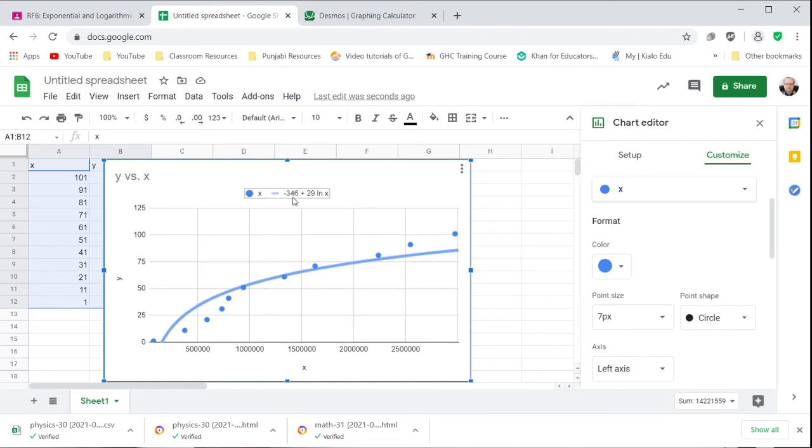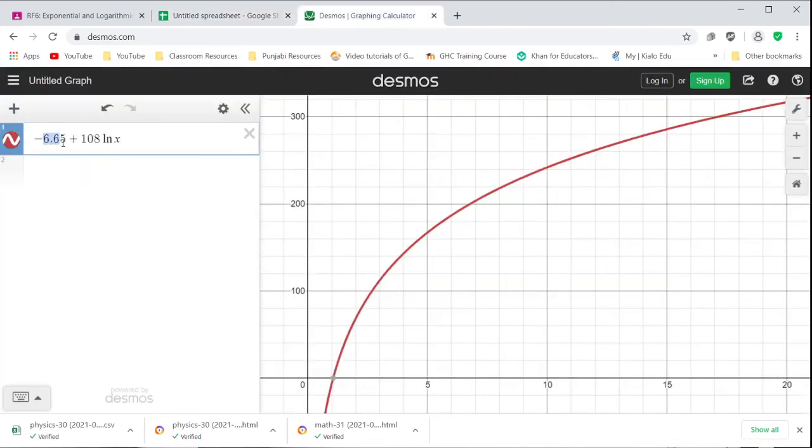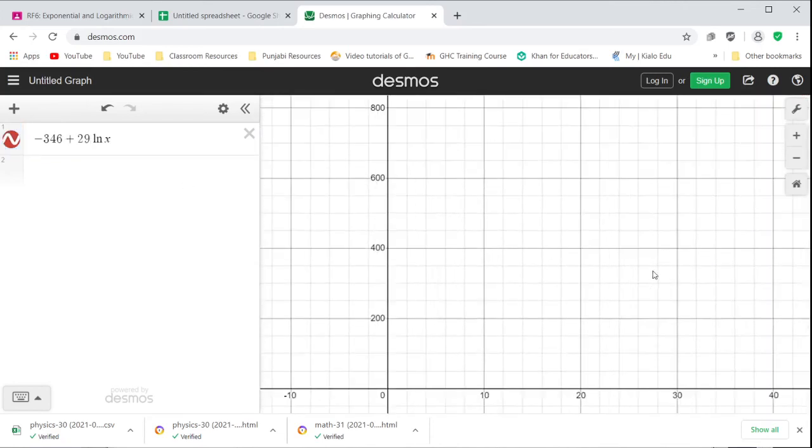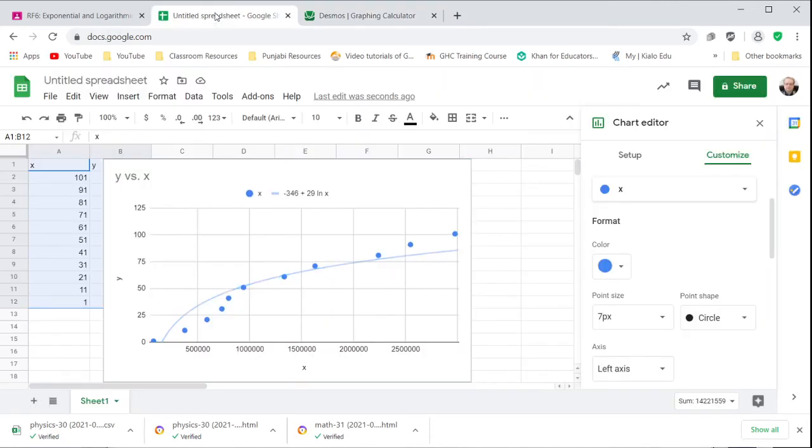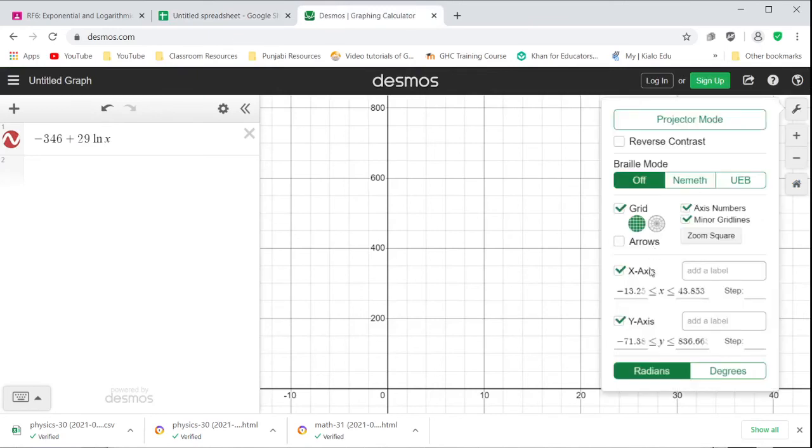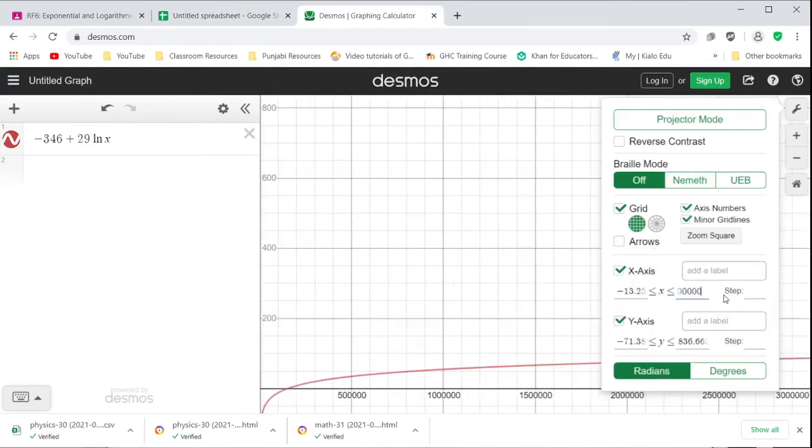So we have that negative 346 plus 29 times the natural log. And that has to be with very different y axis. So y from 0 to 125 and x from 0 to 3 million. And then the y just goes to 125.